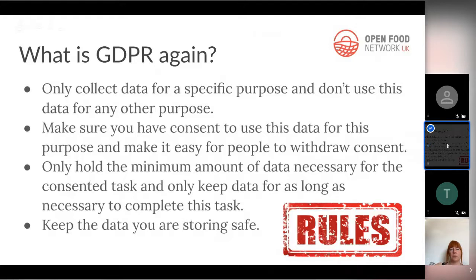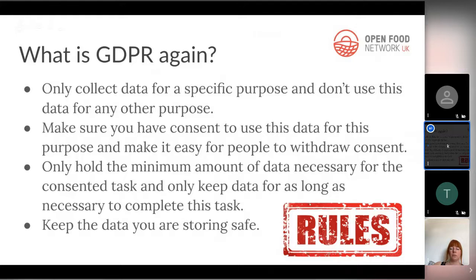The four key GDPR rules are: only collect data — like an email address and name — for a specific purpose and don't use it for any other purpose; make sure you have consent to use this data and make it easy for people to withdraw consent — MailChimp makes this easy by including an unsubscribe option in every email, which is another reason to use MailChimp rather than sending general emails.